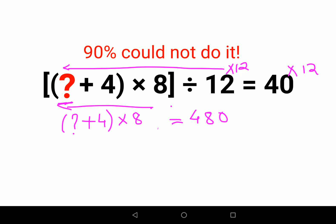So now what we will do to get rid of this 8 from your LHS, you will divide both sides by 8. So this and this will cancel and you are left with 1s and 60s. So now you are left with question mark plus 4 equals to 60.